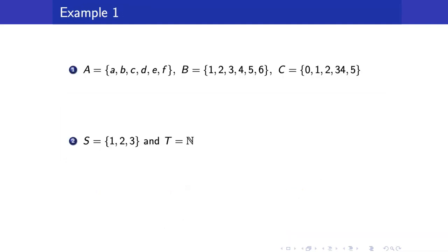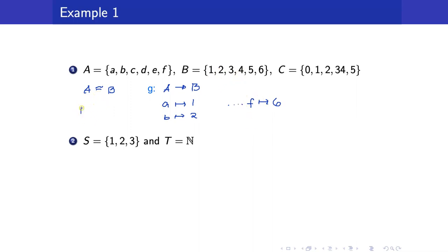For example, consider sets A, B, and C. Just by looking at this, A and B are equivalent — there is a one-to-one correspondence or bijection from A to B. It maps A to 1, B to 2, and so on until F maps to 6. Similarly, B is also equivalent to C. You can always find a bijection: 1 goes to 0, 2 goes to 1, and so on. A is equivalent to C as well.